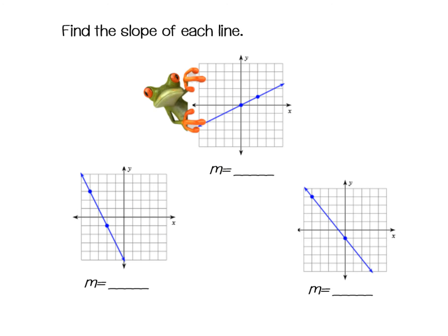I'm going to number these — this is number one, number two, and number three. Go ahead and find the slope of number one. The slope for number one: we need to go up one over two, so my slope here is one-half.